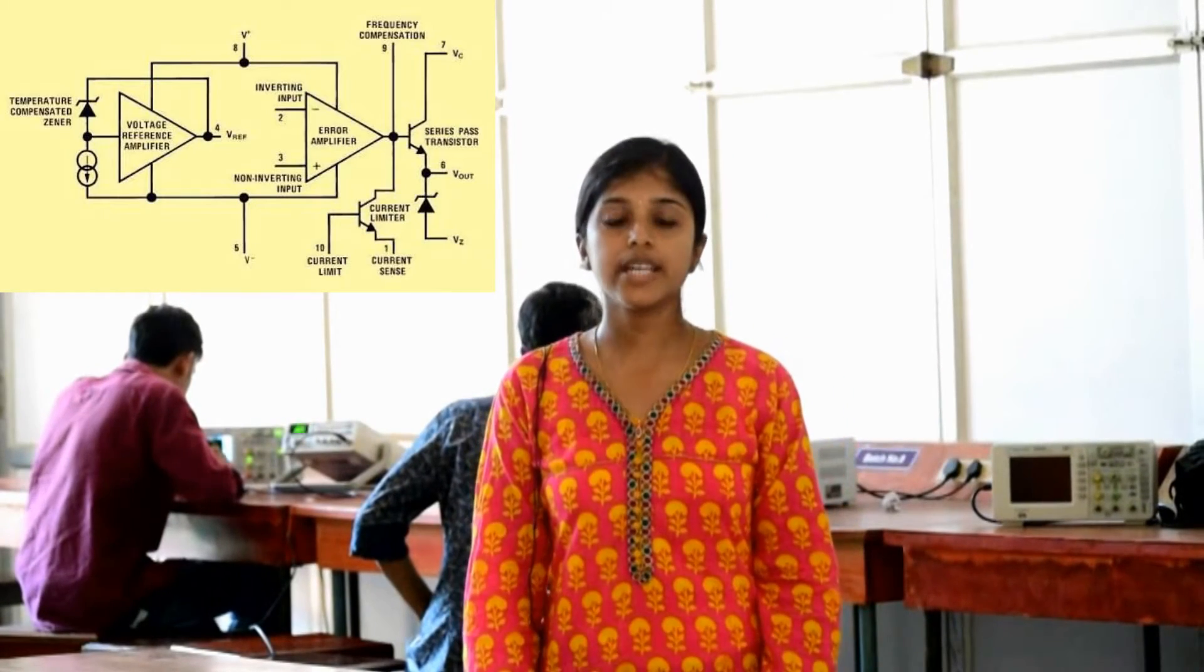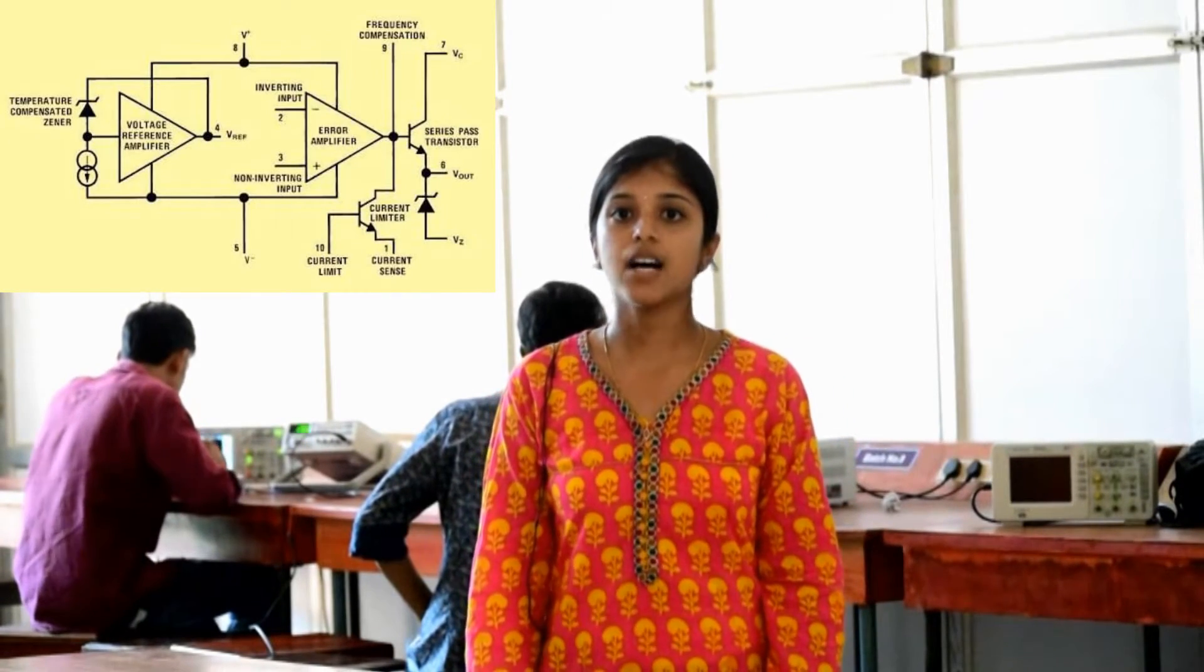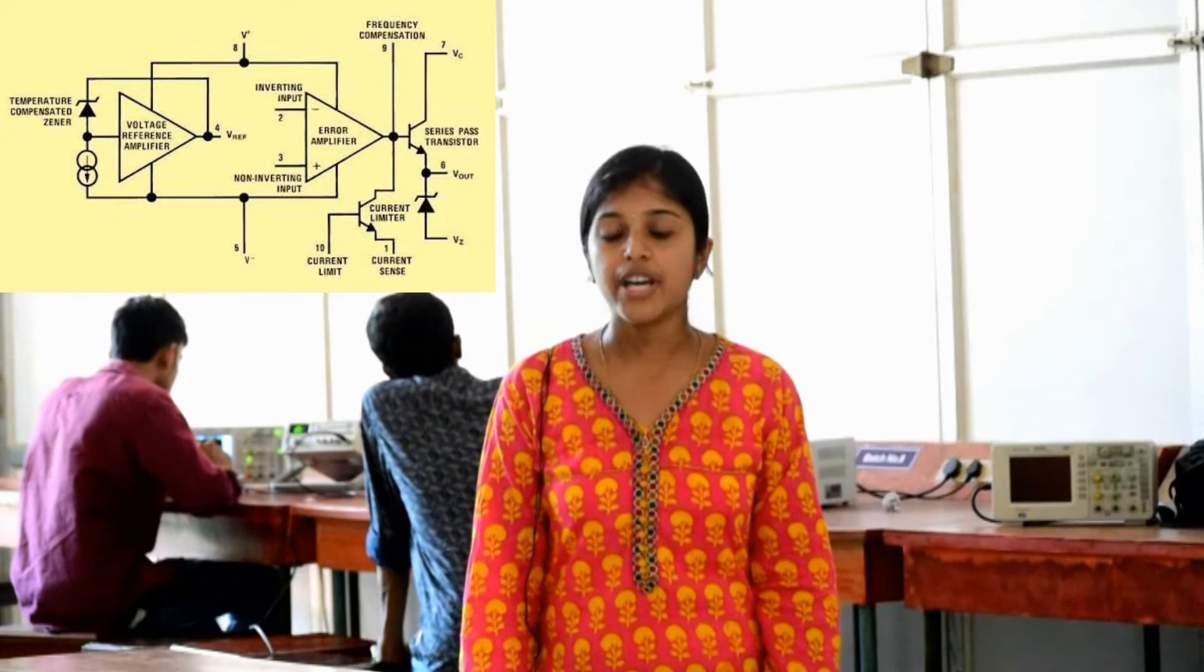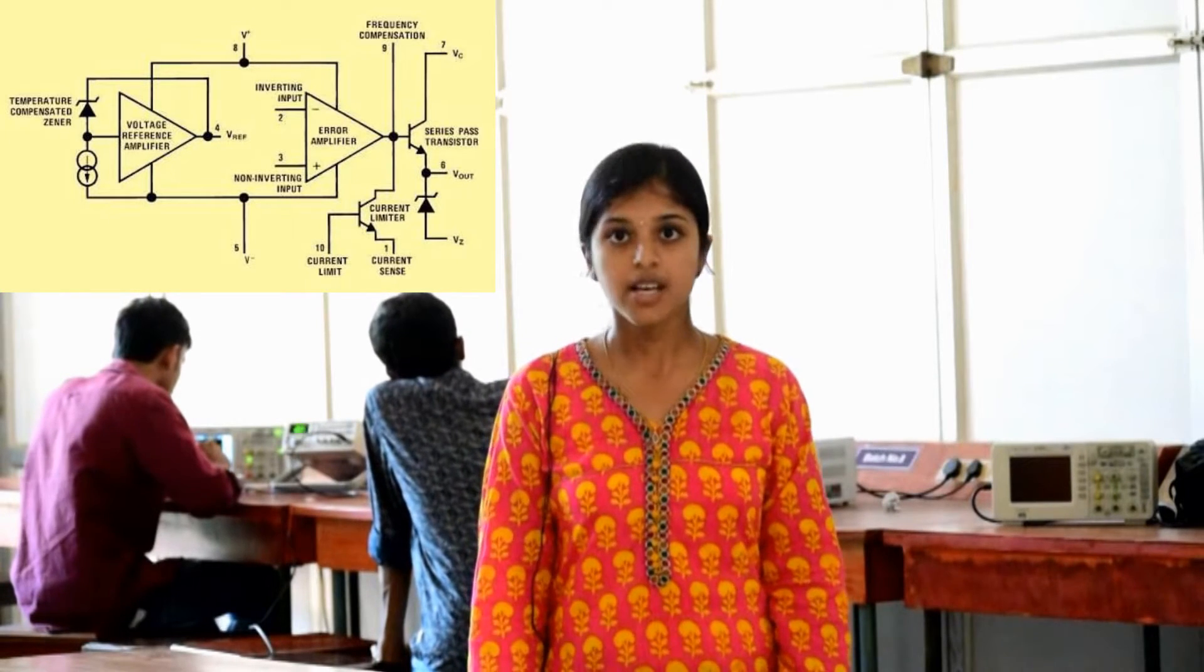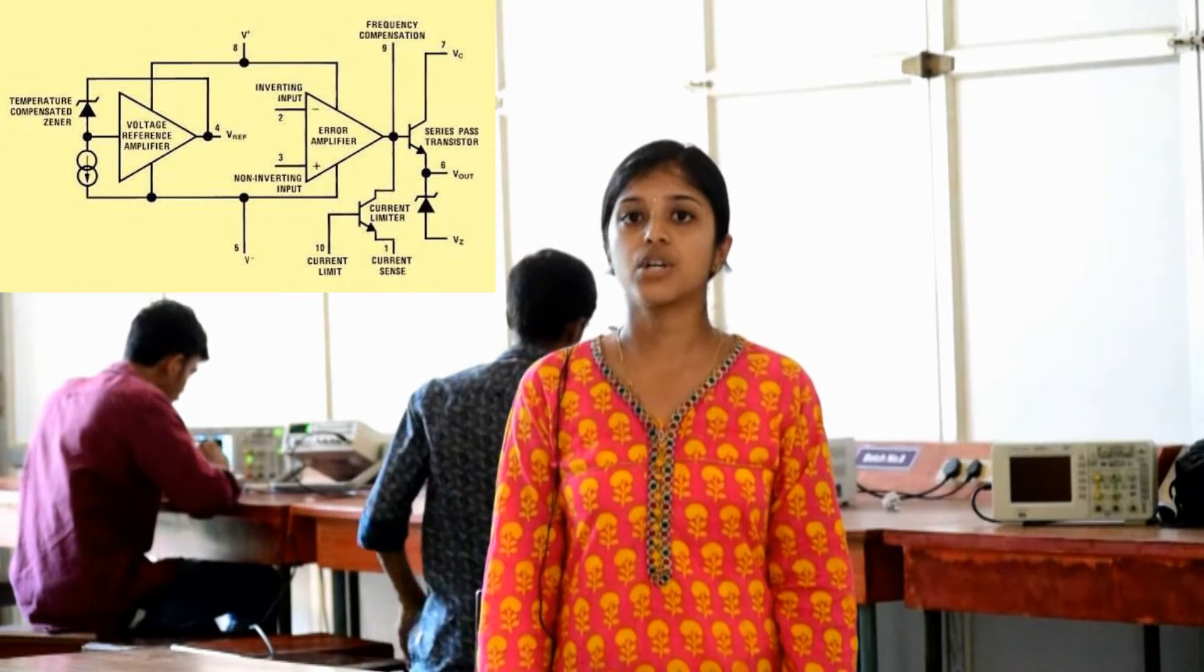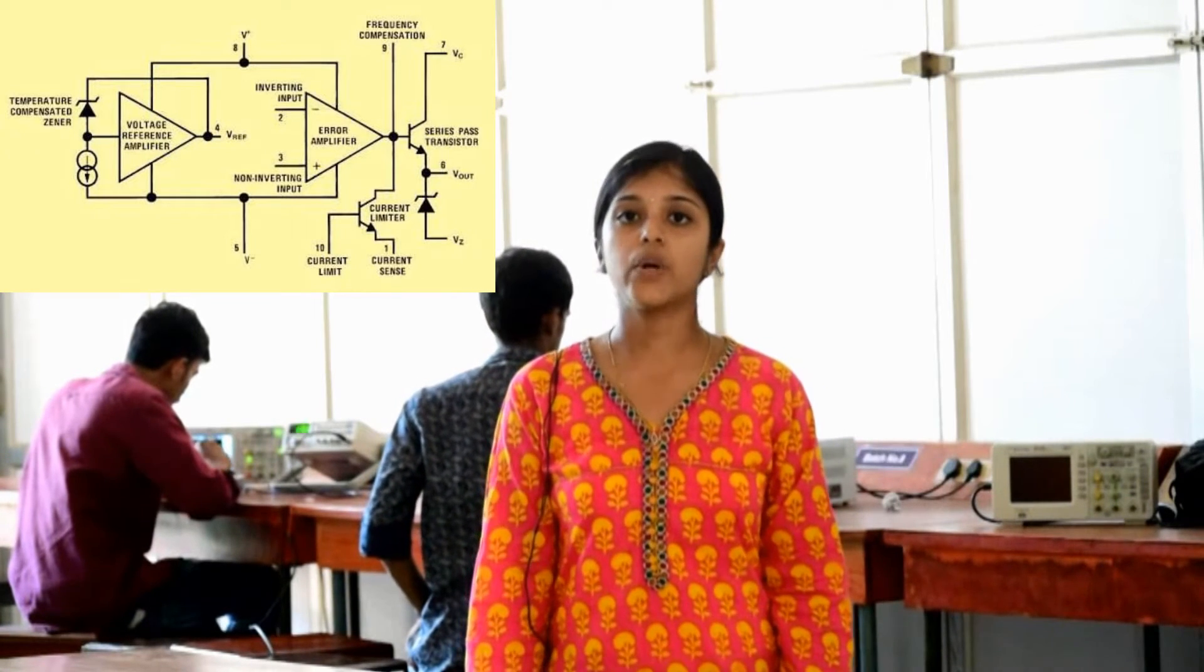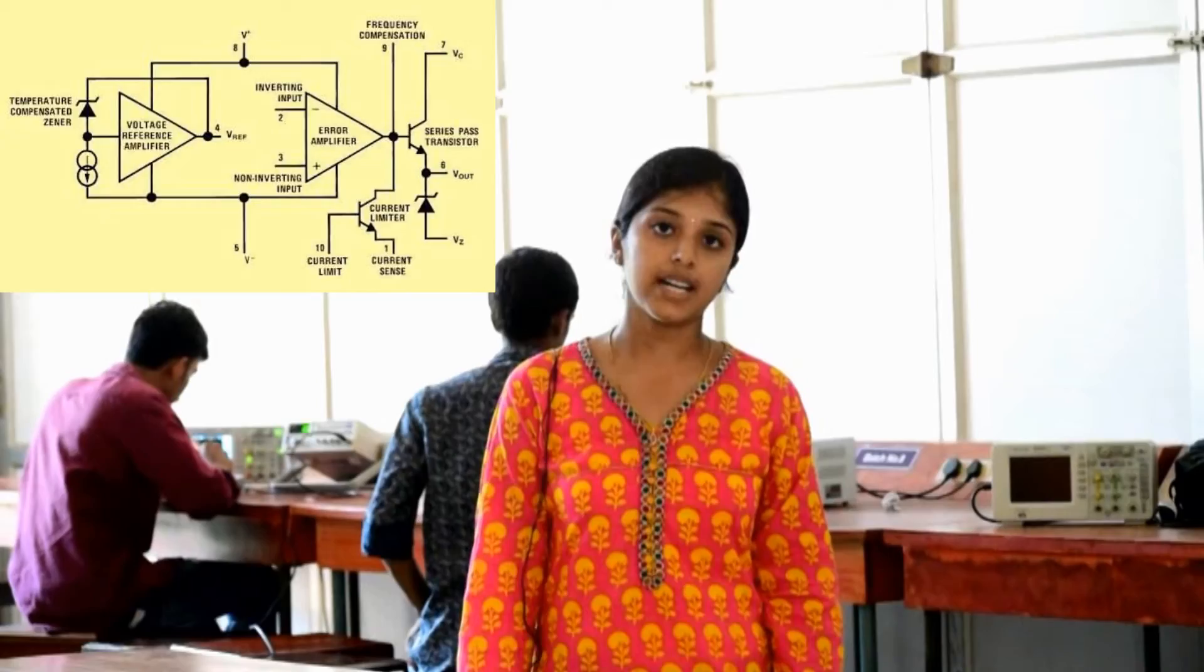The difference between the voltage at the non-inverting terminal and the output voltage is fed back to the inverting terminal of the error amplifier. The error amplifier amplifies this voltage and drives the power transistor Q1 to minimize the difference between inverting and non-inverting terminal voltage of the error amplifier.